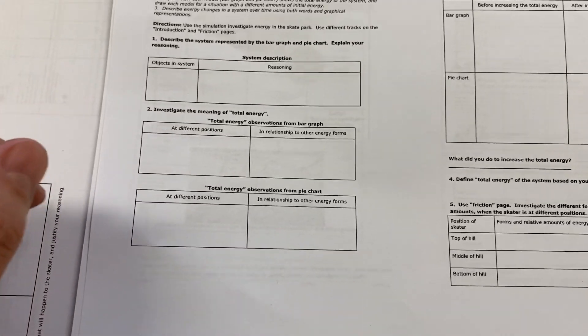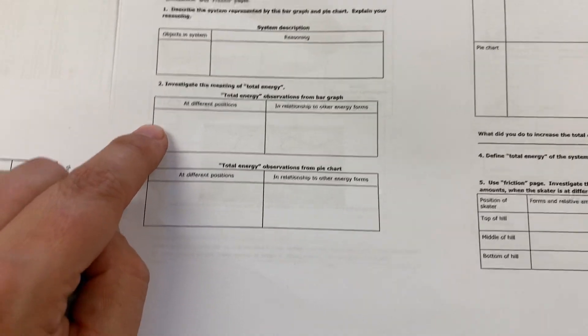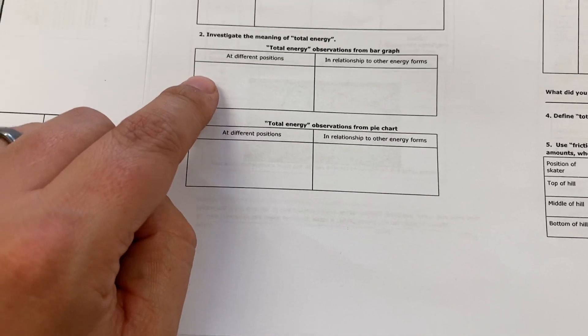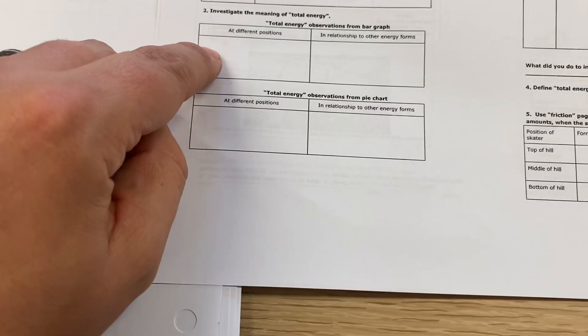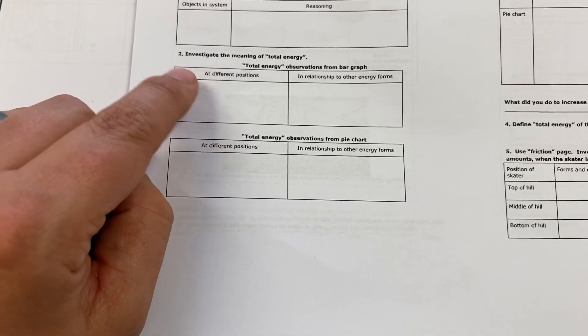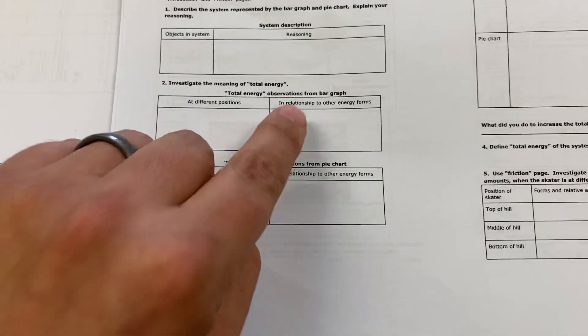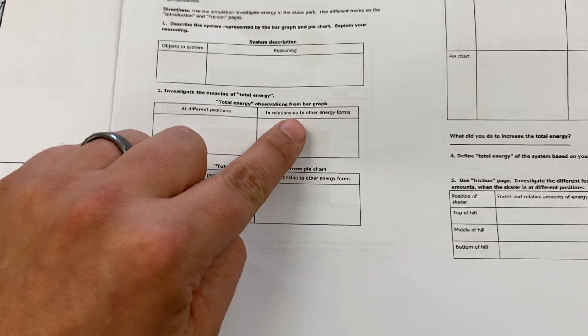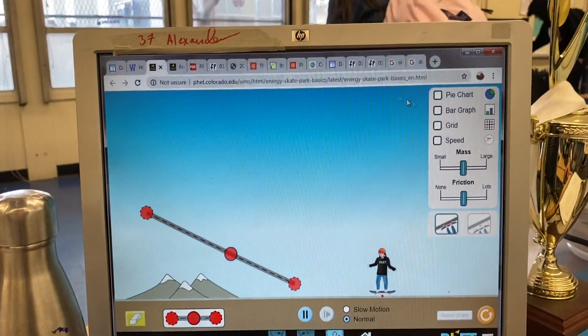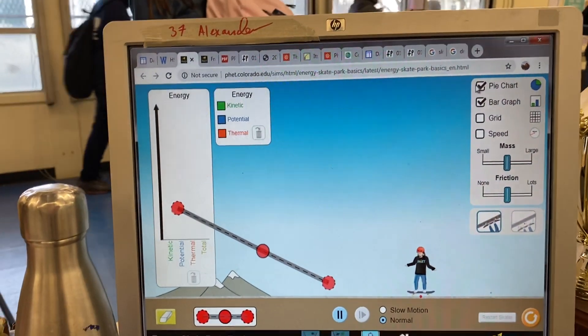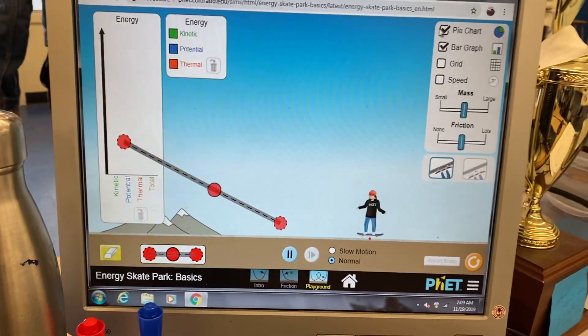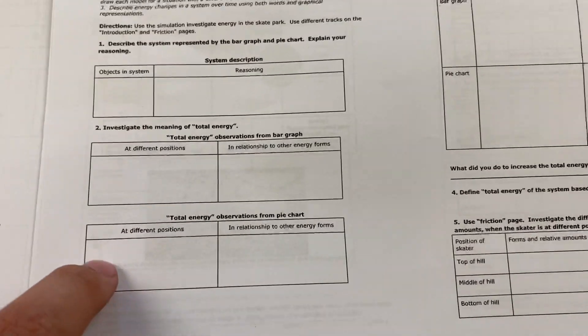For this part right here, you've got to think about the total energy at different positions. Easy way to do that: think about high and low, and think about how that looks on a bar graph, think about how that looks on a pie chart, and the relationship to other energy forms. There are three different energy forms that are here. Think about those different energy forms and how they change from high to low.